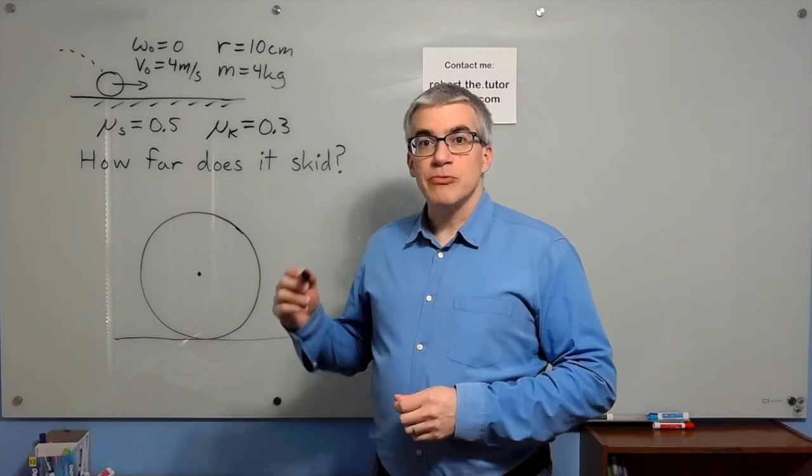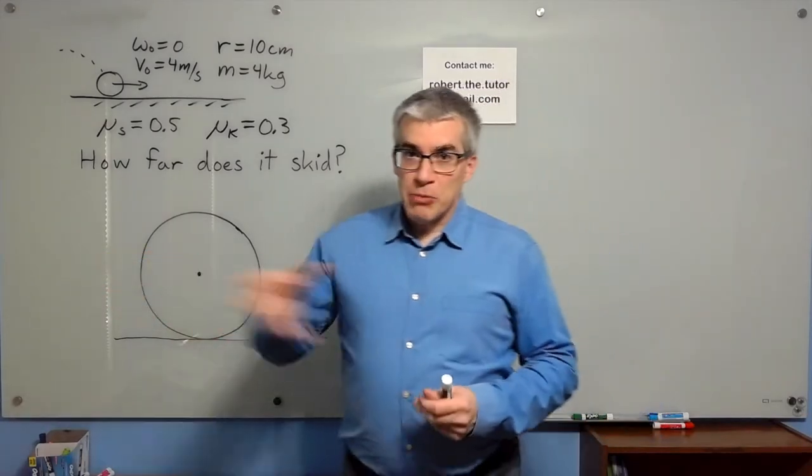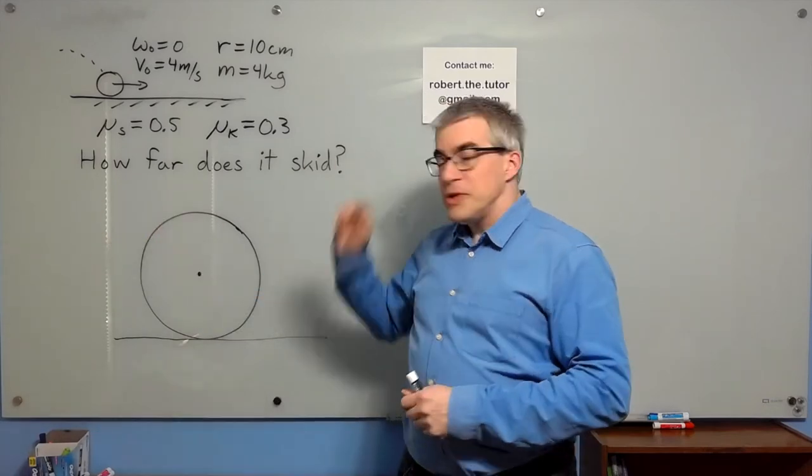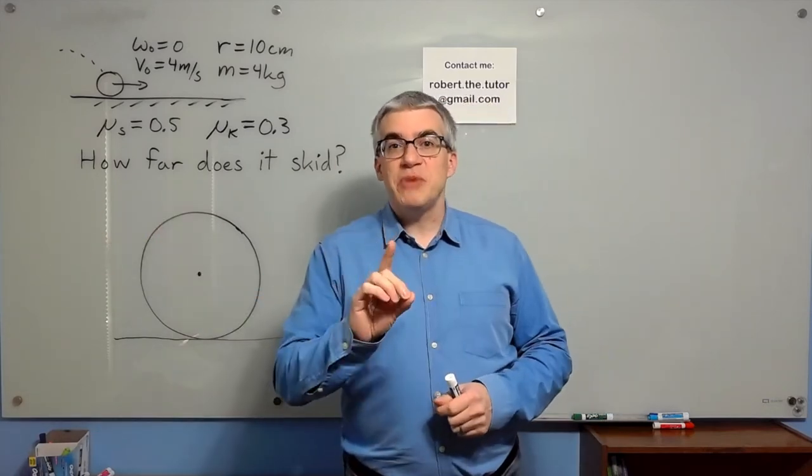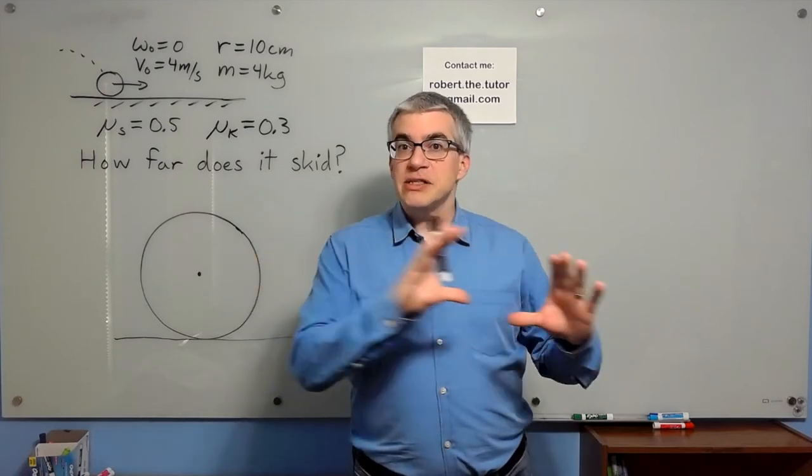Here's a physics problem in rotational motion challenge problem. You throw a bowling ball onto a lane. You throw it with a sideways velocity of 4 meters per second, but it's not spinning. So when it hits the lane, it starts to skid.